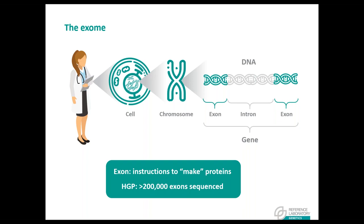When we speak about the exome, we are referring to the coding region in the human genome, and it comprises about 200,000 exons. The exome's potential knowledge has given the world vast resources of detailed information. This information can be thought of as part of the basic set of inheritable instructions for the development and function of a human being.